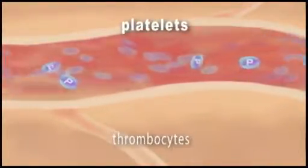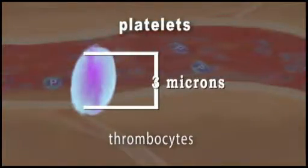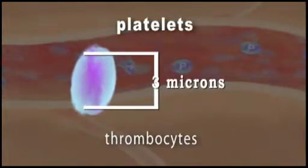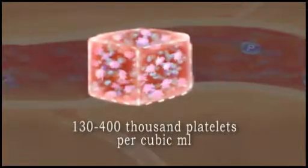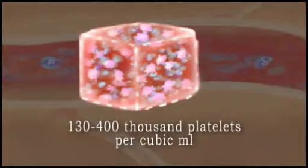Platelets, called thrombocytes, are round or oval discs about 3 microns in size. There are approximately 130,000 to 400,000 platelets in a cubic milliliter of blood.